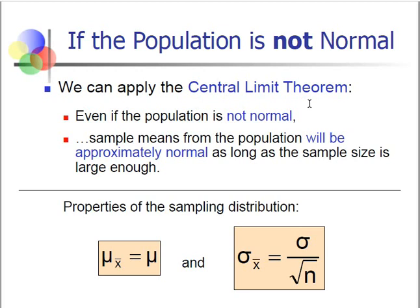What the central limit theorem states is that even if the population distribution is unknown, or if you know it and find it is not normal, the sample means will be approximately normally distributed as long as the sample size is large enough. So as long as the sample size is large enough, the distribution of the sample means will be normally distributed, with the corresponding mean and standard error.